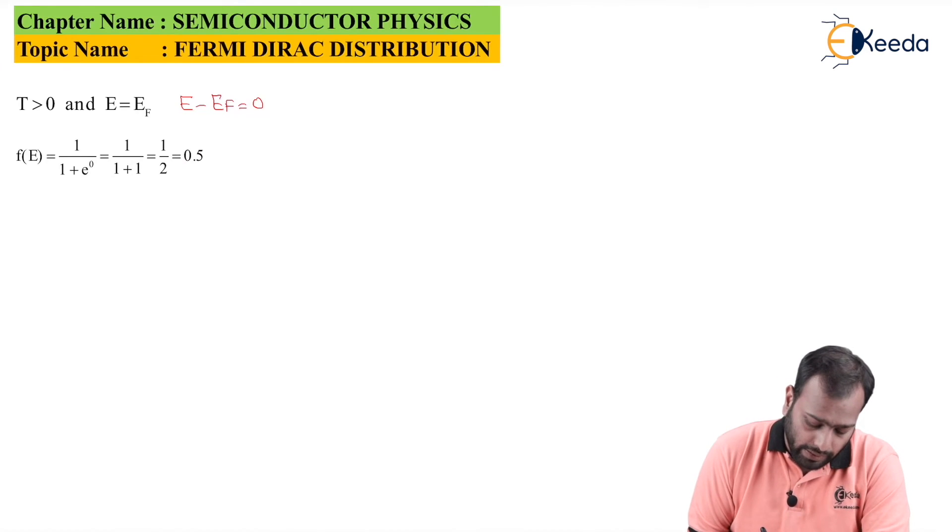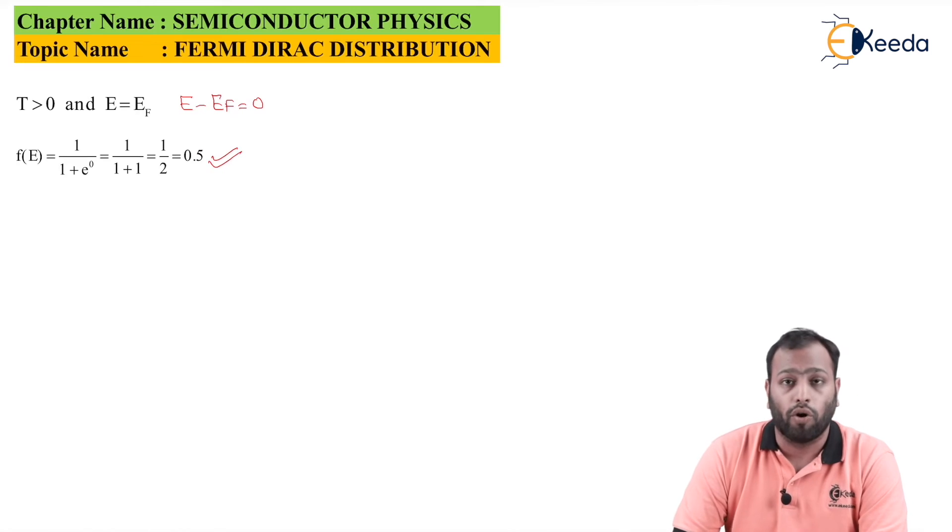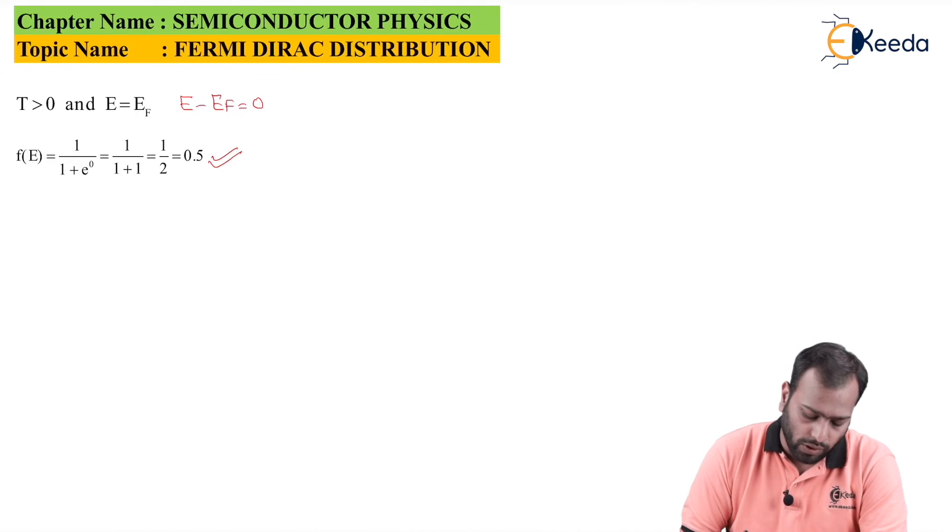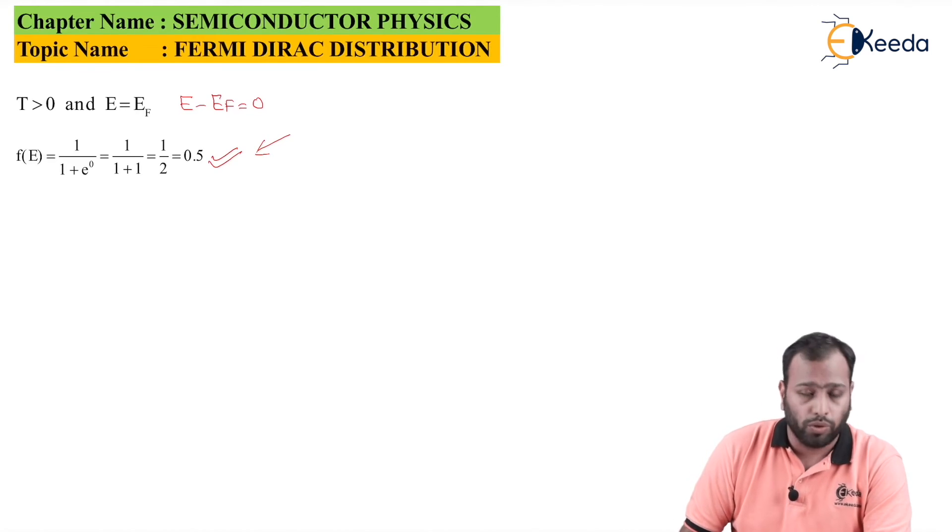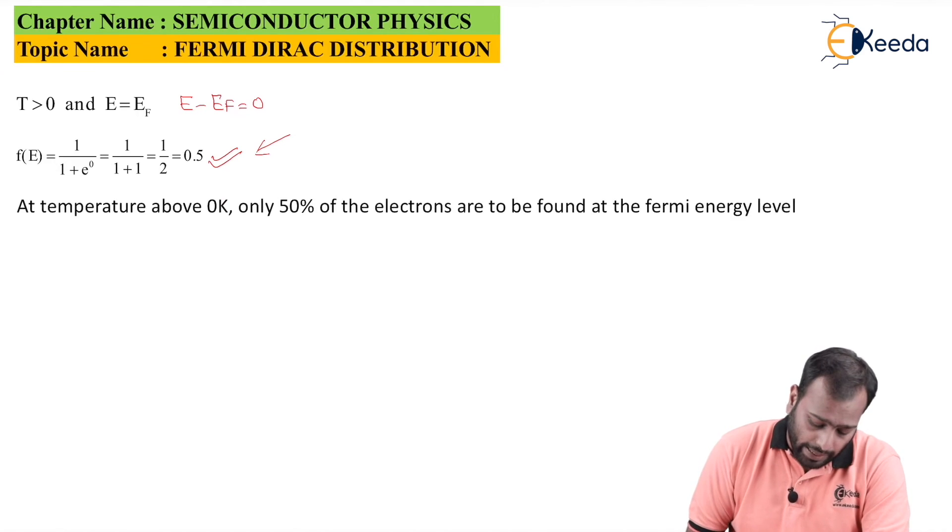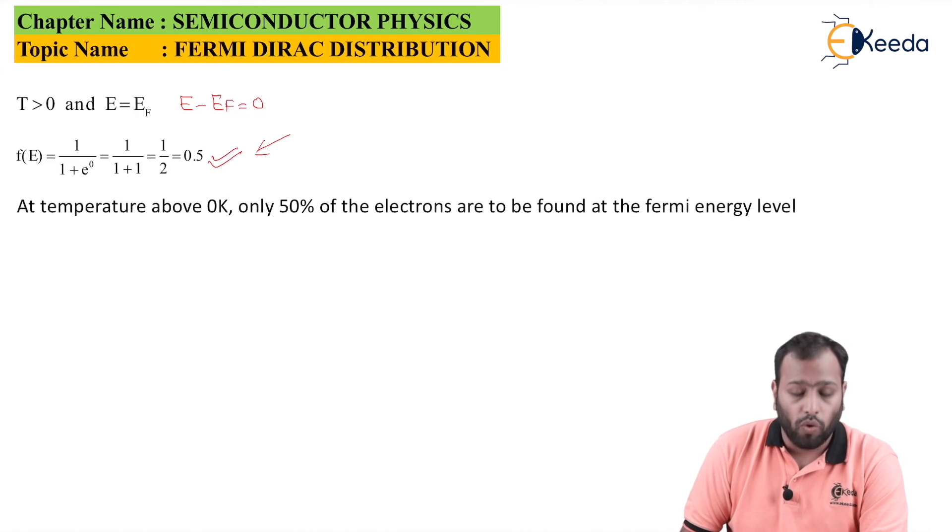As you can see, this value is applicable for all the temperatures, and hence the Fermi level is also defined as the level at which the probability of finding electron is 50%, and this definition holds true just because of this case. So something can be concluded from this is at temperature above 0 Kelvin, only 50% of the electrons are to be found at the Fermi energy level.